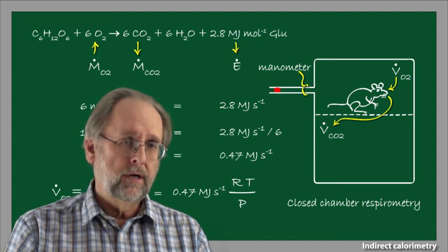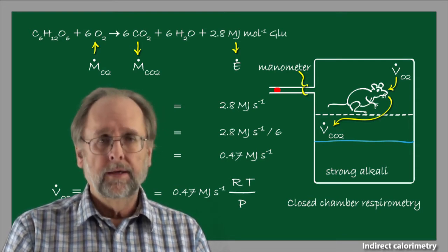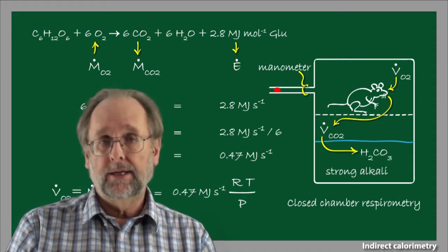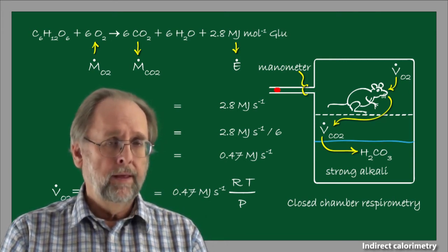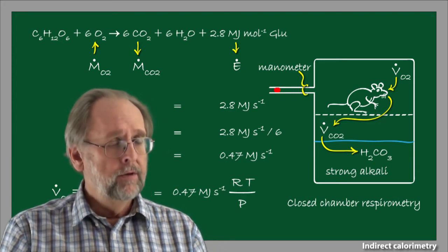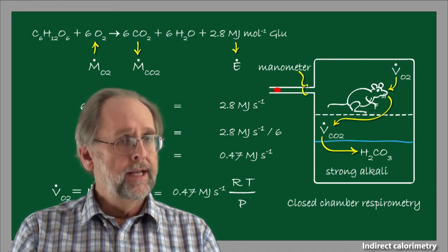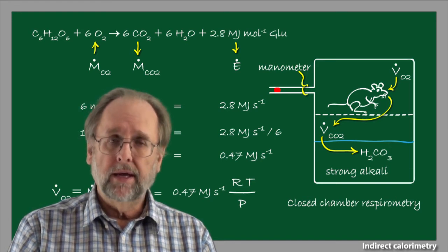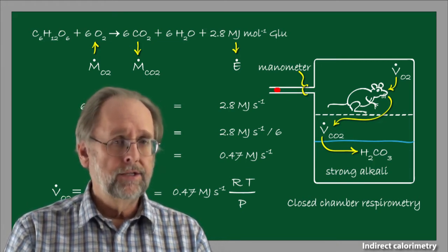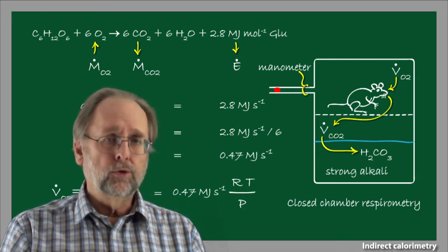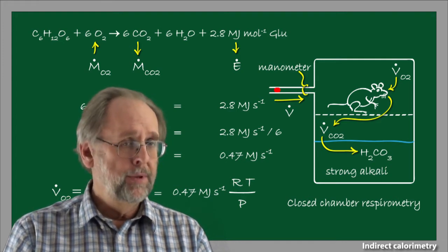In a typical closed chamber respirometer, however, the animal is suspended above a solution of strong alkali — usually saturated sodium hydroxide. This strong alkali solution ensures that carbon dioxide exhaled by the animal becomes dissolved in the water and is converted strongly to carbonic acid and carbonate. Because the carbon dioxide is taken out of the gaseous phase and into solution, the removal of oxygen from the chamber by metabolism is no longer offset by the addition of carbon dioxide. Consequently, the quantity of gas molecules within the chamber — and therefore the volume of gas — declines at a rate equal to the rate at which oxygen is being consumed by the mouse.